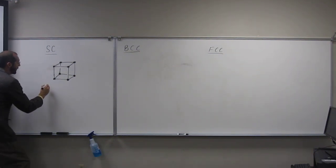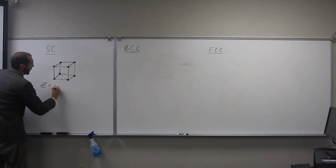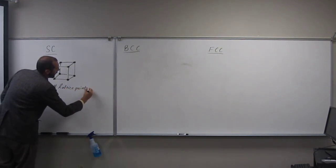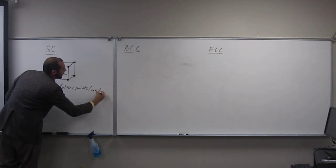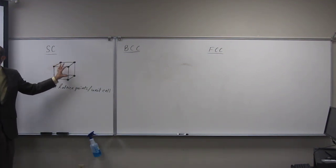And what you'll find is the lattice points per unit cell, so that's Z, so the number of lattice points per unit cell, is going to be the effective number of atoms that are contained within the unit cell.